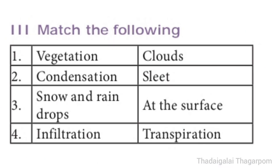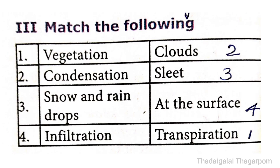Roman Number 3: Match the Following. A side — 1st: Vegetation, 2nd: Condensation, 3rd: Snow and raindrops, 4th: Infiltration. The answer for 1st — Vegetation is Transpiration. 2nd — Condensation is Clouds. 3rd — Snow and raindrops is Sleet. 4th — Infiltration is at the surface. The order is 2, 3, 4, 1.